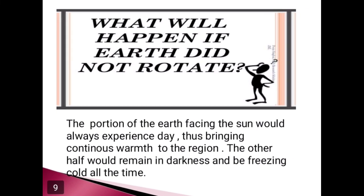Have you ever imagined what will happen if the earth did not rotate? If the earth did not rotate, the portion of the earth facing the sun would always experience day, thus bringing continuous warmth to that region. The other half would remain in darkness and be freezing cold all the time. Life would have been impossible on the earth in such extreme conditions.